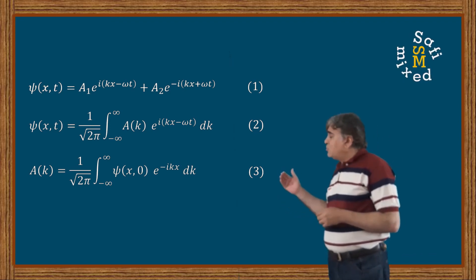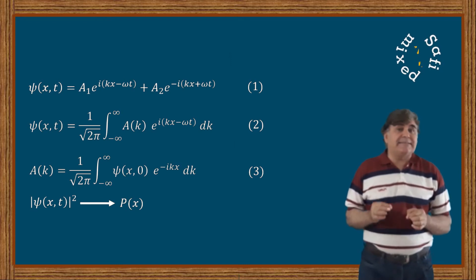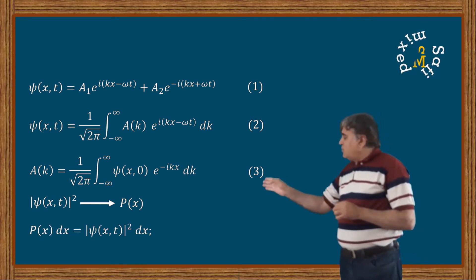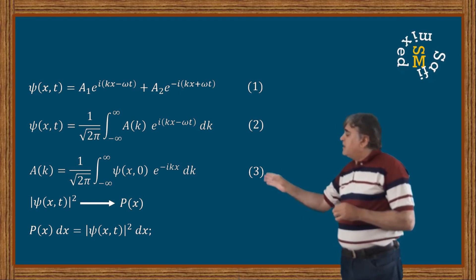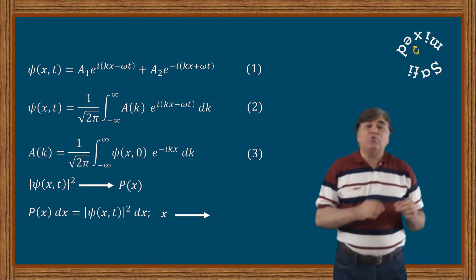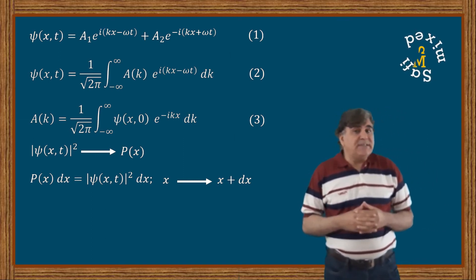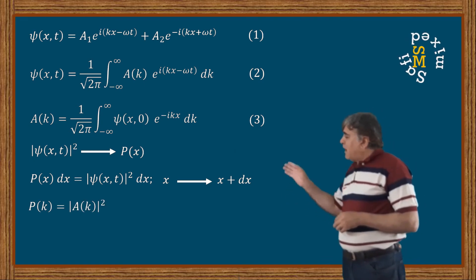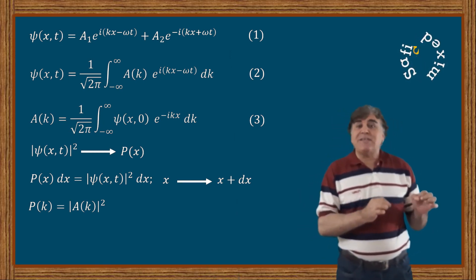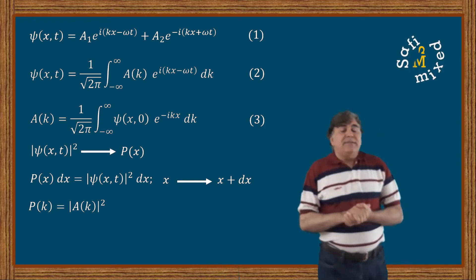Now let us understand the difference in physics between equations 2 and 3. The modulus square of the wave function in equation 2 — |ψ(x,t)|² — gives the probability density P(x,t) of finding the particle at position x at time t. And P(x,t)·dx = |ψ(x,t)|²·dx gives the probability of finding the particle between x and x+dx. Similarly, the modulus square of the probability amplitude in equation 3 — P(k) = |A(k)|² — gives the probability density of measuring wave vector k, or momentum p = ℏk, of the particle.